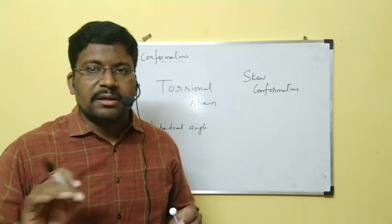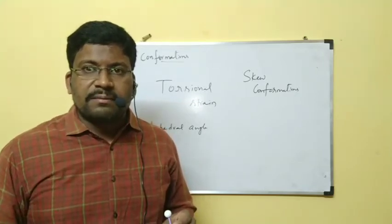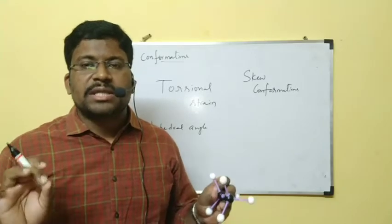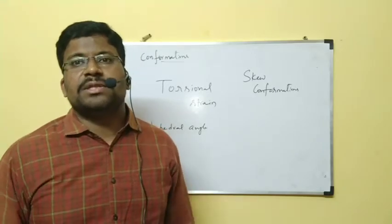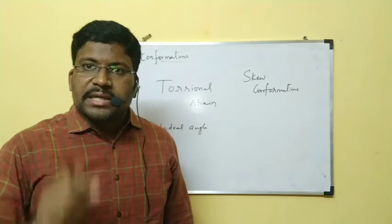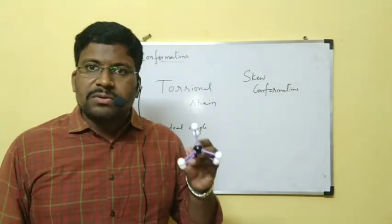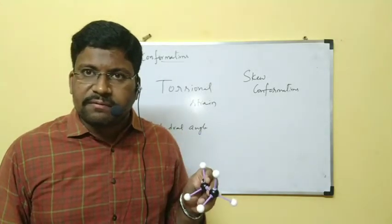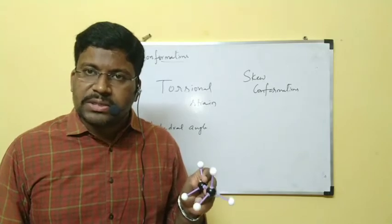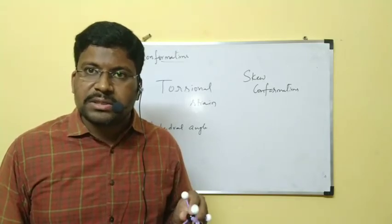Out of staggered form and eclipsed form, staggered form is more stable. Two scientists proposed how to show the staggered form and eclipsed form. Those two scientists are Newman and Sahos — their two representations we will see.